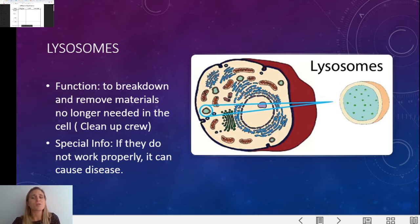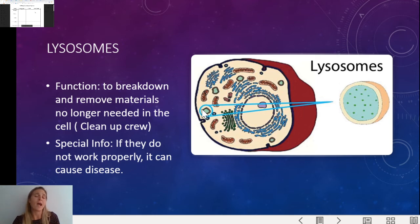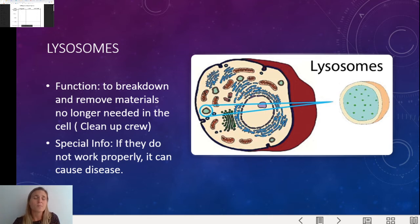Next are lysosomes. The lysosomes' function is basically to break down and remove materials that are no longer needed — it's kind of like a stomach, but there are a lot of them in the cell. Inside, they've got different kinds of acids and other things that will break down what your cells don't need anymore; they clean up the cell. Special thing about them: if we don't have them, it can cause disease or cell death, just like if your stomach isn't breaking your food down properly, you can get sick.